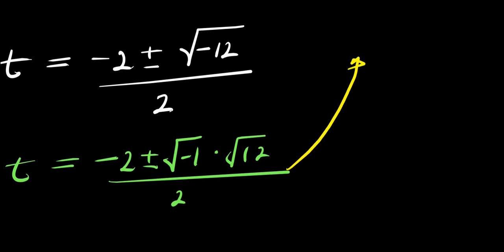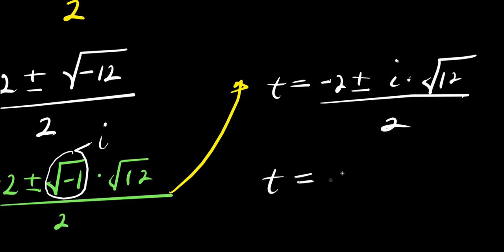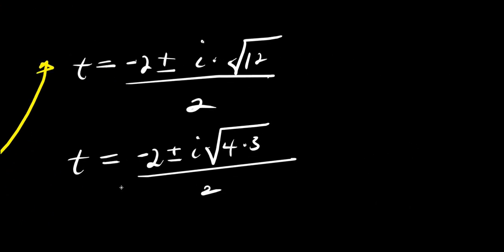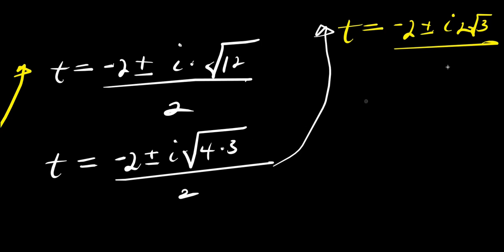We simplify the square root of negative twelve. Square root of negative one is i, and square root of twelve equals square root of four times three, which is two root three. So we have t equals negative two plus or minus i times two root three, all divided by two. Dividing each term by two, we get t equals negative one plus or minus i root three.